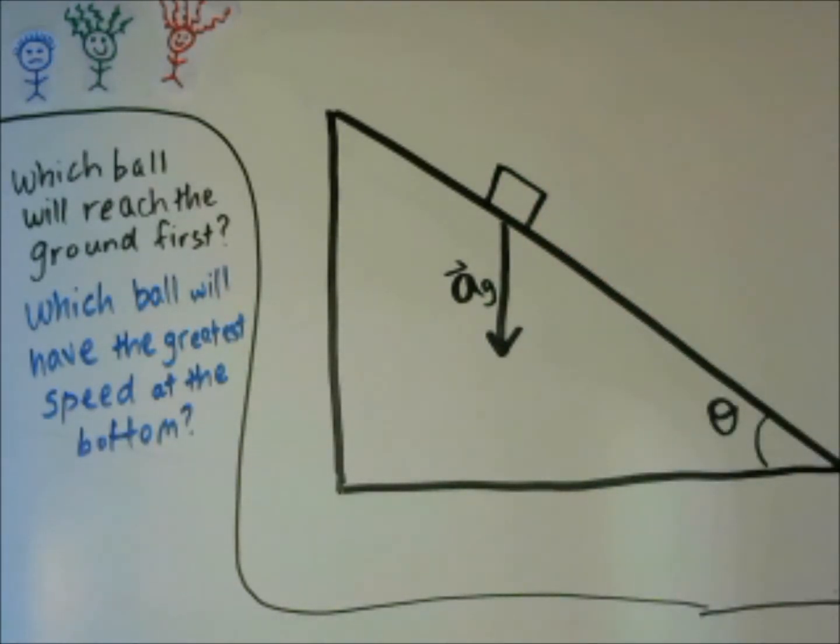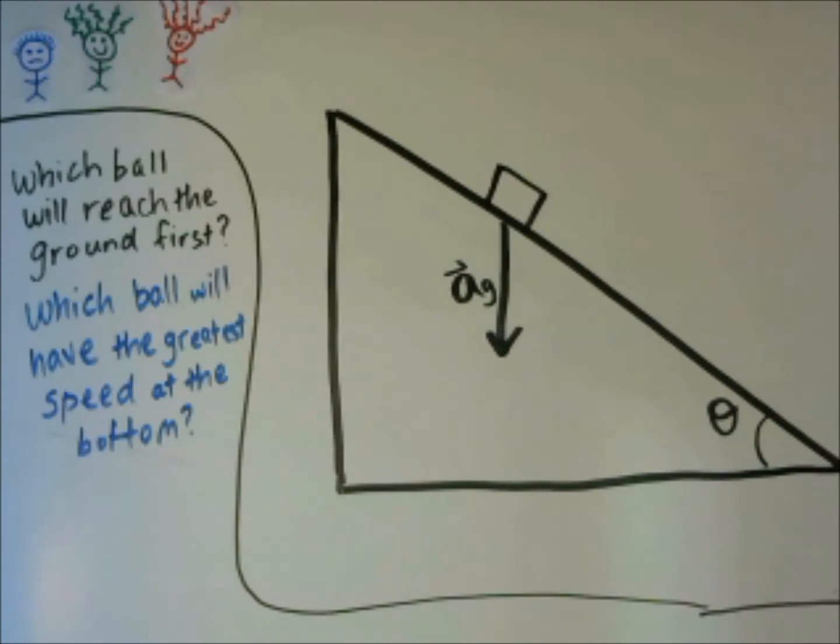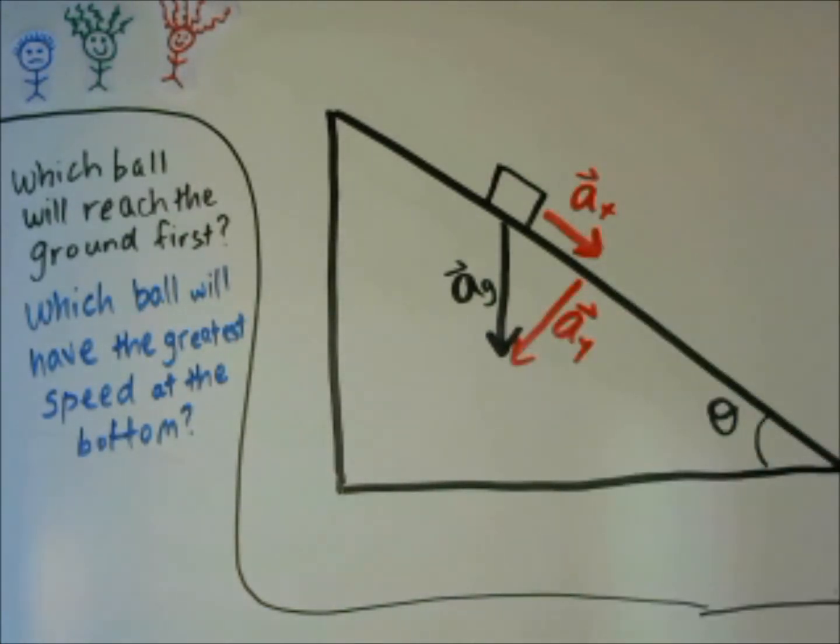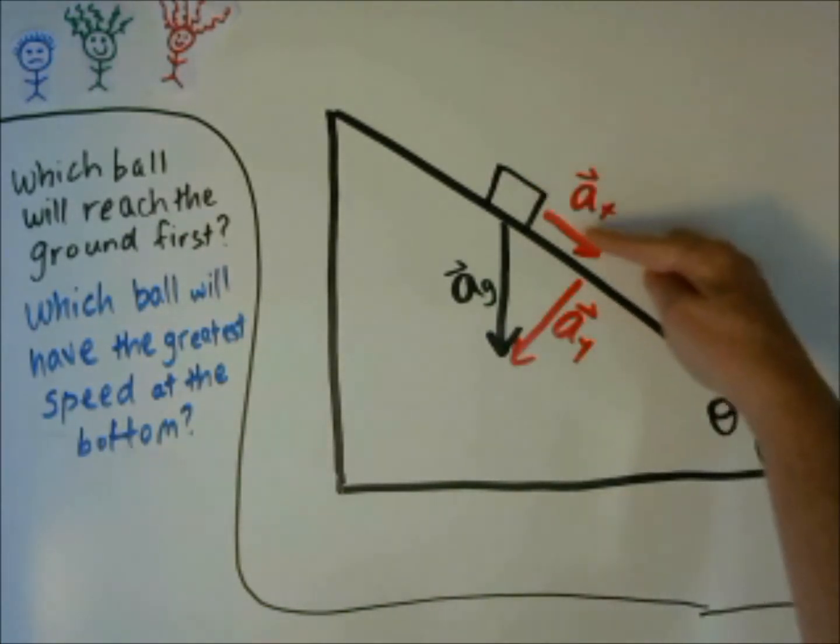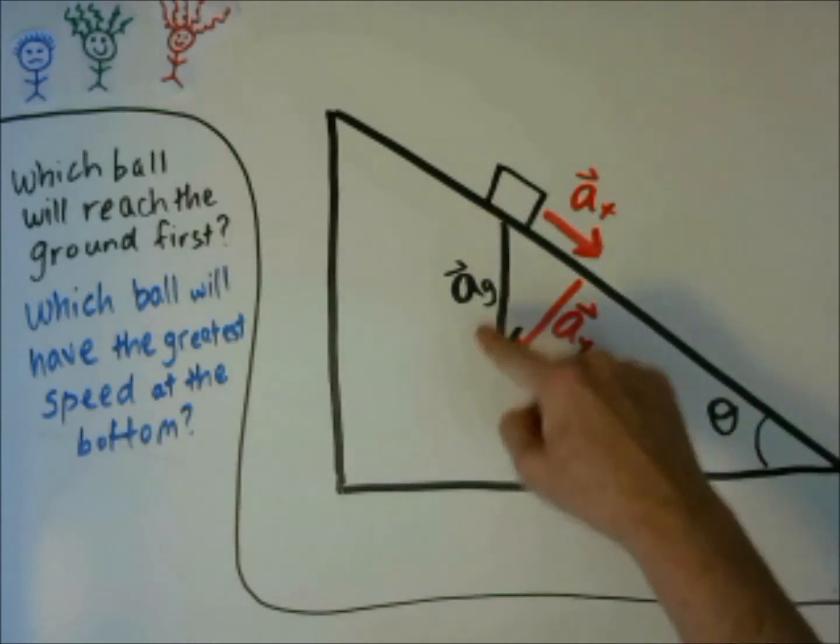In this case, we're going to have to break that acceleration vector into two vectors, the x and the y components. In the x direction, we have some part of this overall vector. We have the x component of the acceleration vector. And in this direction, we have the y component.